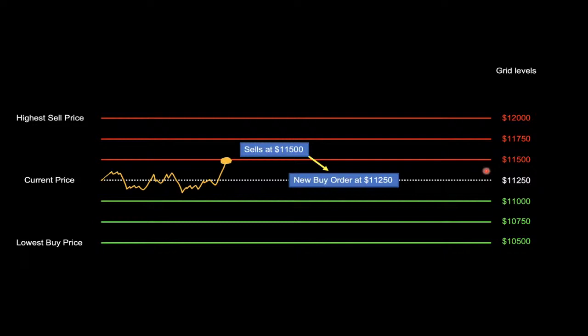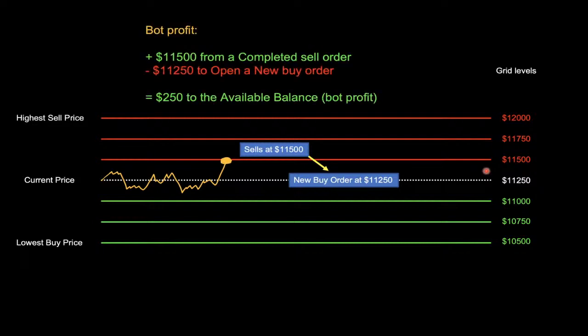In this example, the algorithm automatically sells the base currency at 11,500, then takes a portion of that cash to plot a new buy limit order just below the price. The calculation is straightforward: we took 11,500 from the sell order and used 11,250 for the new buy order. That difference is exactly the bot profit, which goes directly to your balance.